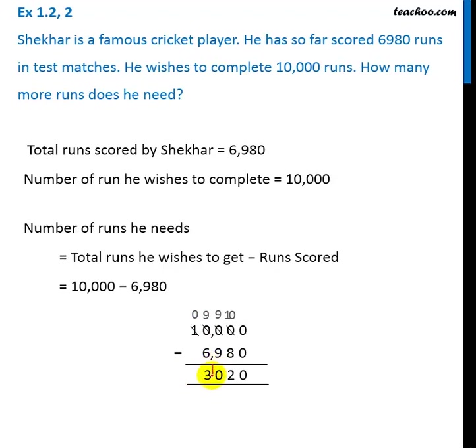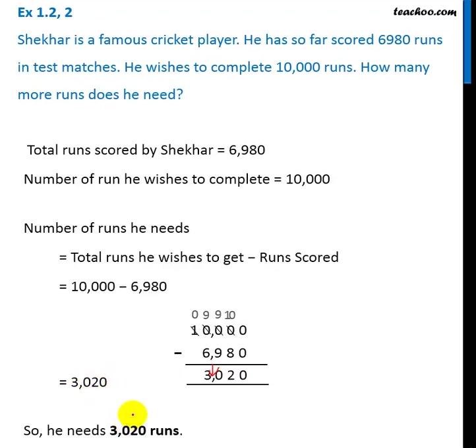Now this comma will come down, so this will be 3,020. So he needs three thousand and twenty runs.